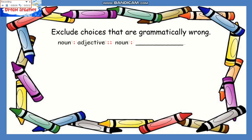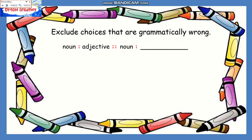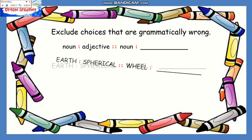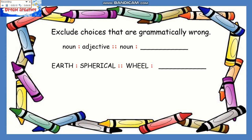Excluding choices that are grammatically wrong — the second instance involves the pattern noun is to adjective as noun is to blank. So we must find another adjective in the second pair of words. Take this as an example: the earth is spherical in shape, so we are looking for the shape of a wheel.